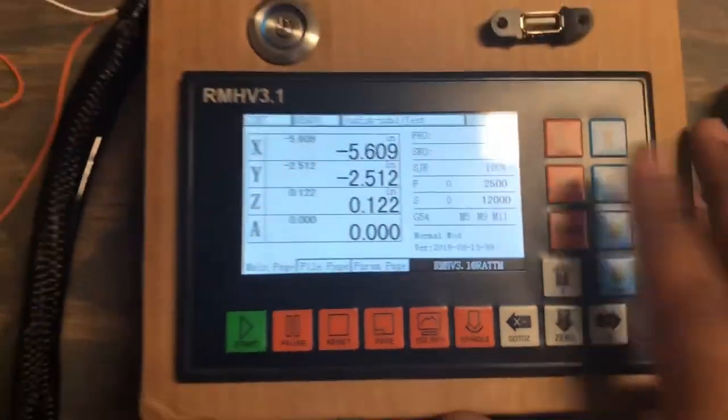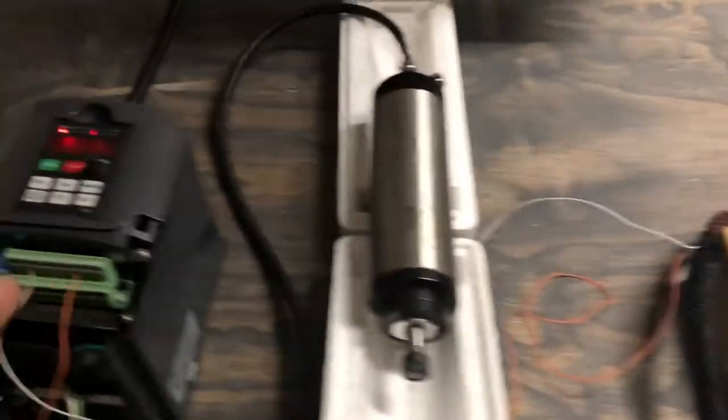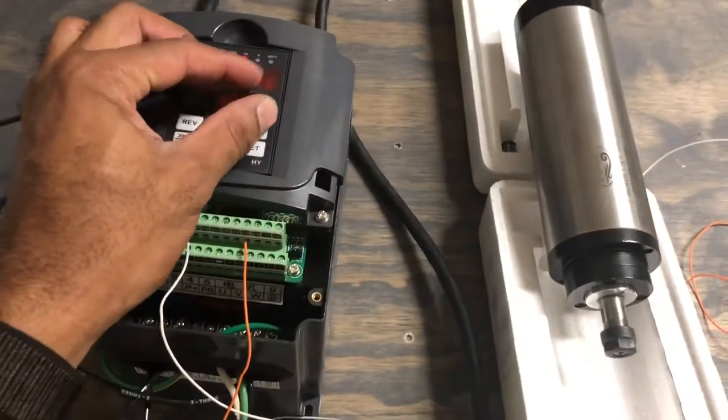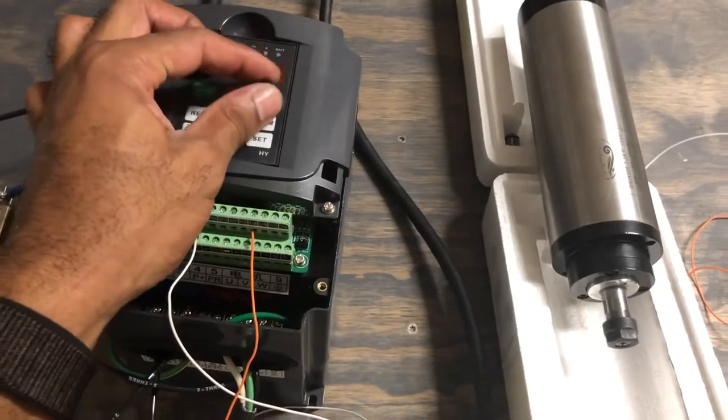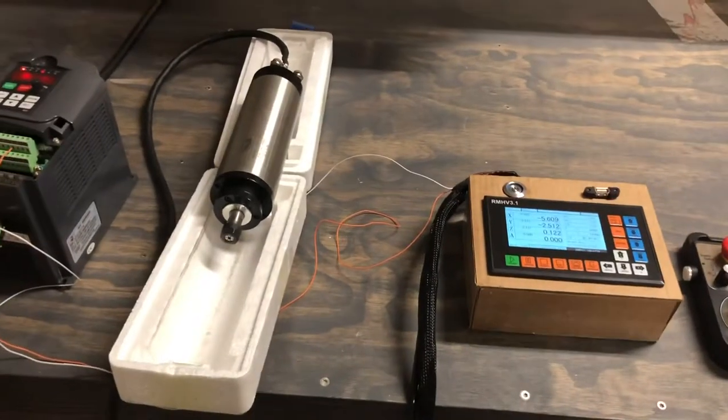And I do have a speed setting on here, but I decided not to use the settings through the controller and use it here, the potentiometer on the unit itself. But that may change, and if so, I can set the speed from the controller.